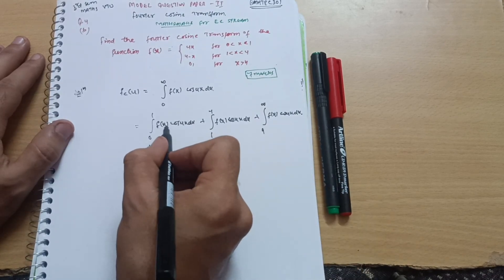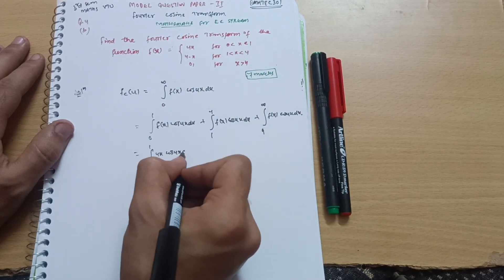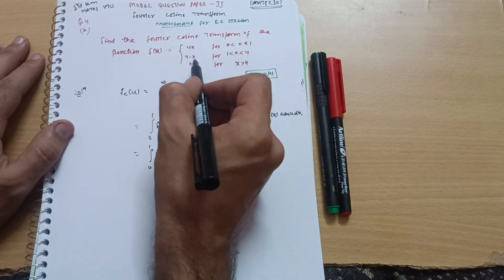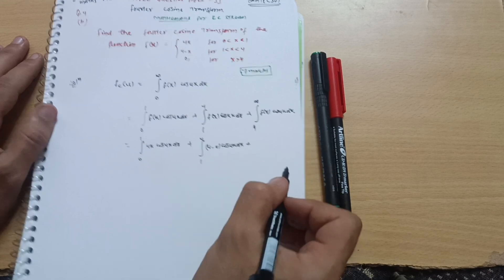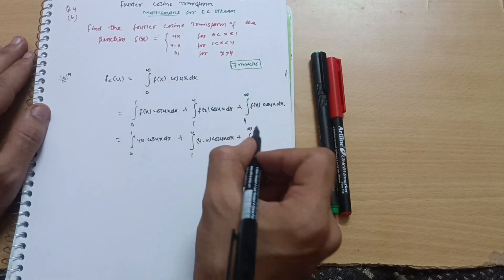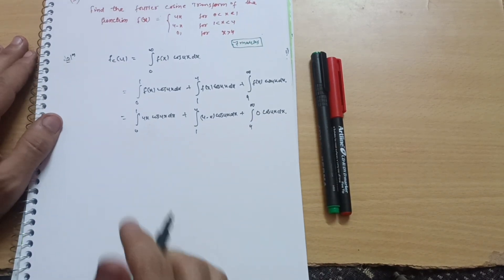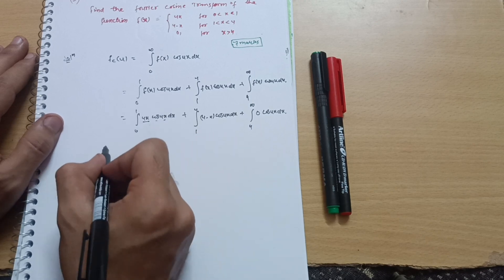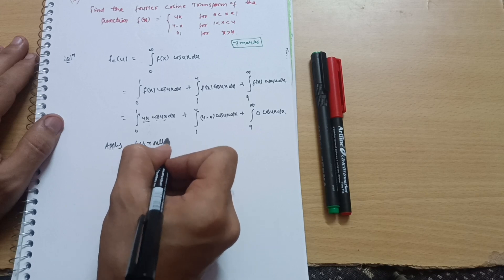Now I substitute the function values. From 0 to 1, f(x) = 4x, so it becomes integral from 0 to 1 of 4x cos(ux) dx. From 1 to 4, f(x) = 4 − x, so it becomes integral from 1 to 4 of (4 − x) cos(ux) dx. For x > 4, f(x) = 0, so the integral from 4 to infinity of 0 · cos(ux) dx equals zero.